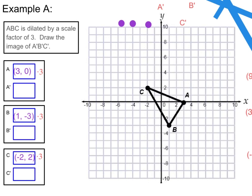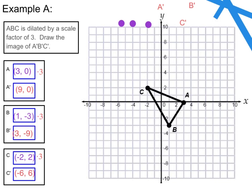Now I'm going to perform the dilation. 3 times 3 is 9, and 3 times 0 is 0, so I end up with 9, 0. 1 times 3 is 3, and negative 3 times 3 is negative 9. Negative 2 times 3 is negative 6, and 2 times 3 is positive 6.